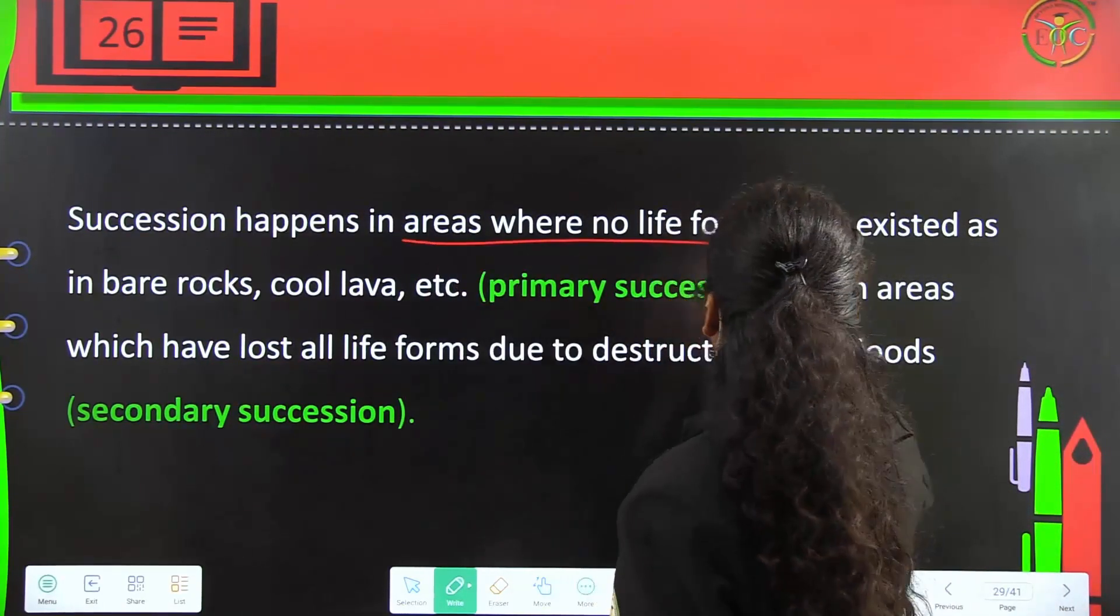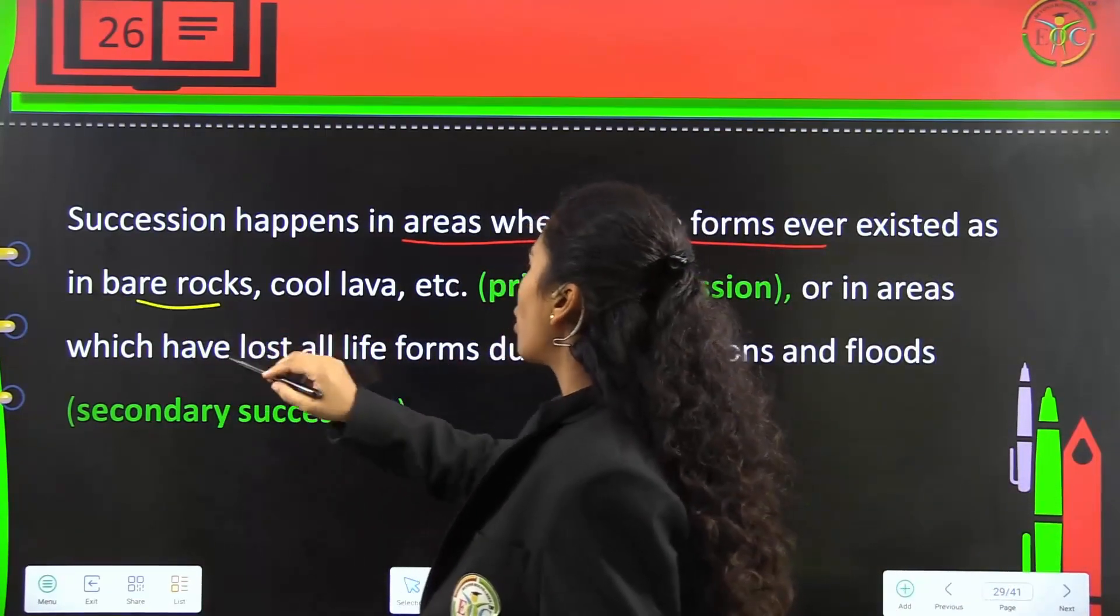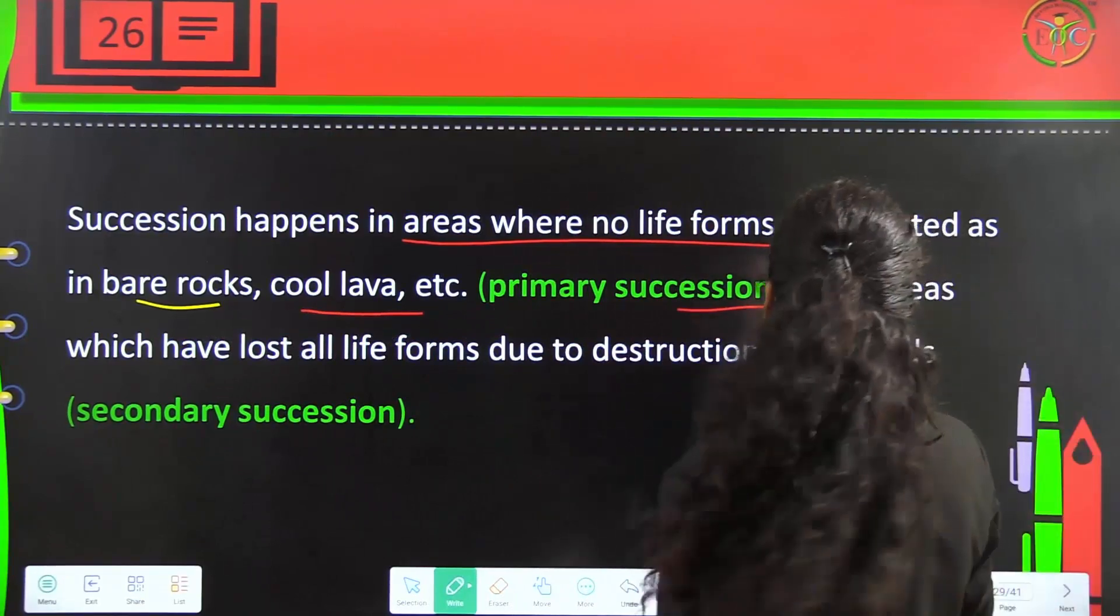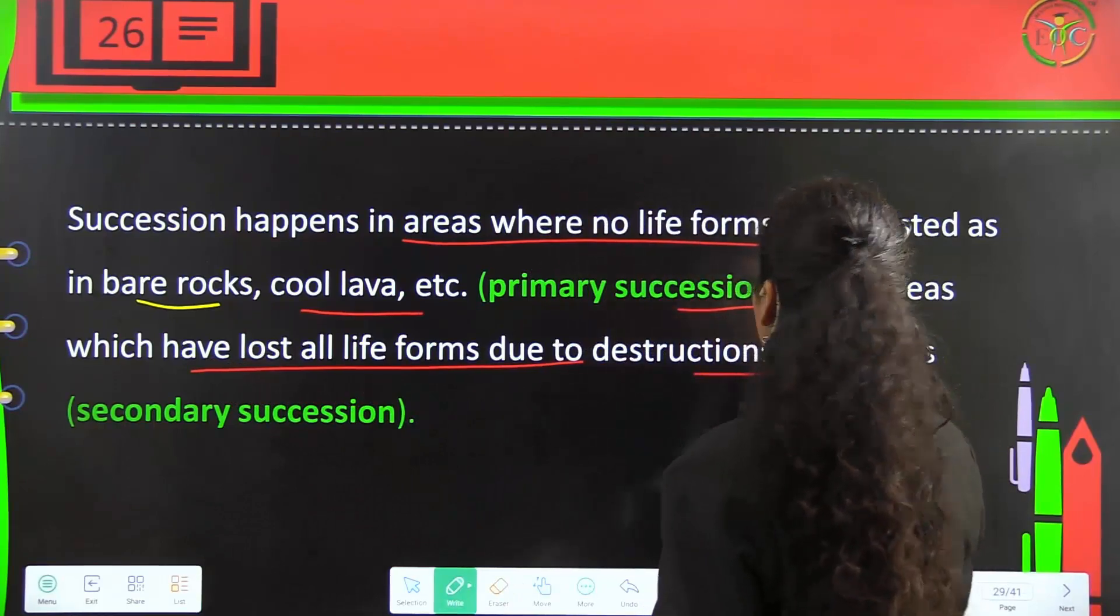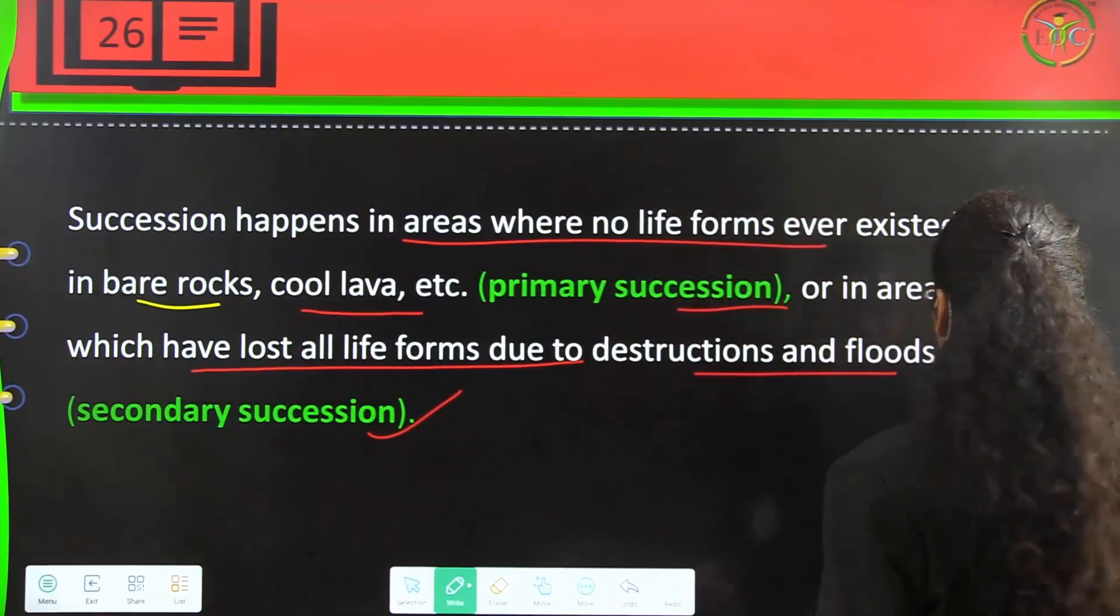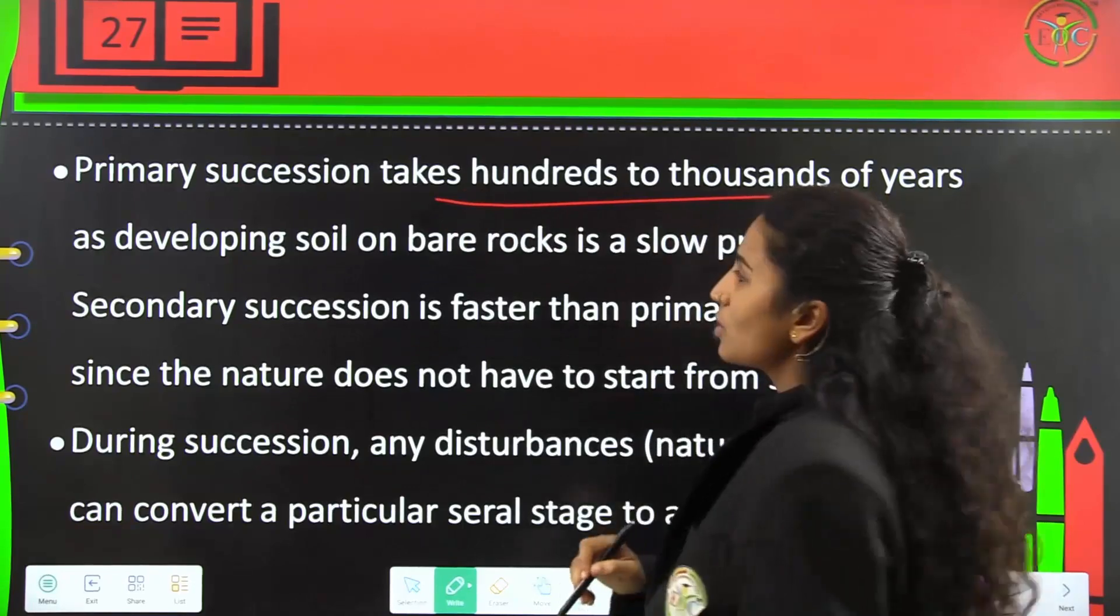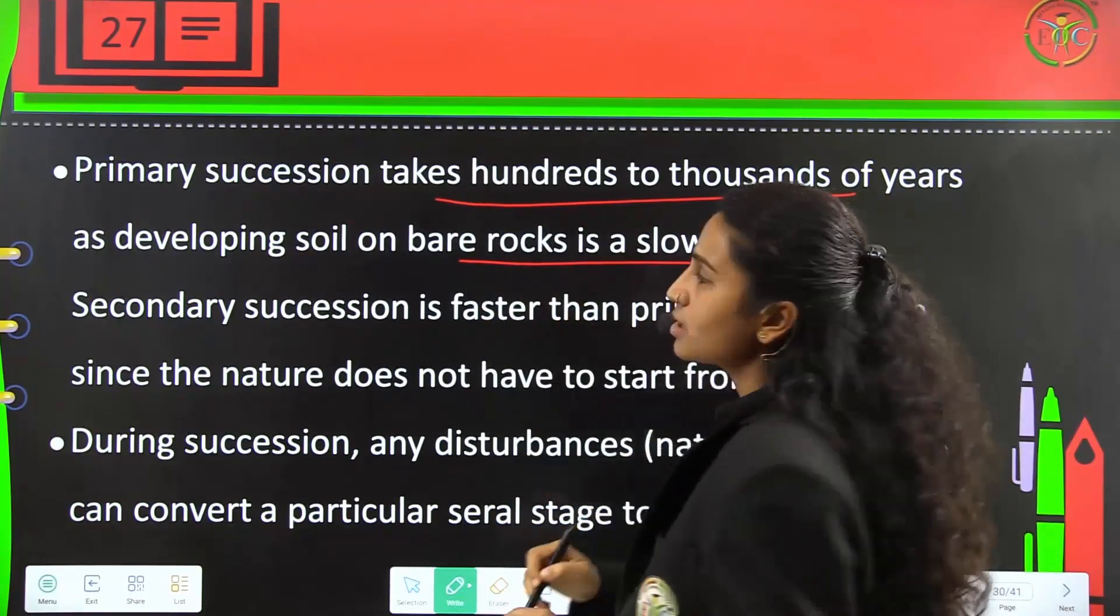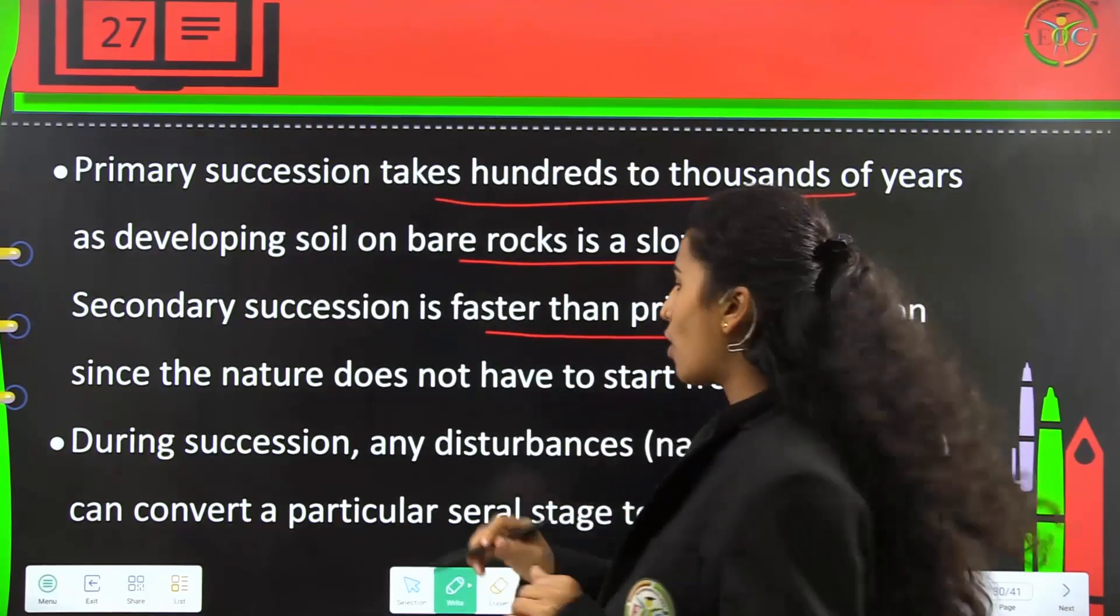Succession happens in areas where no life forms ever existed, as in bare rocks, cool lava, etc., which is primary succession. Or in areas which have lost all life forms because of destruction or floods, which is secondary succession. Primary succession takes hundreds to thousands of years, while secondary succession is faster because nature does not have to start from scratch.